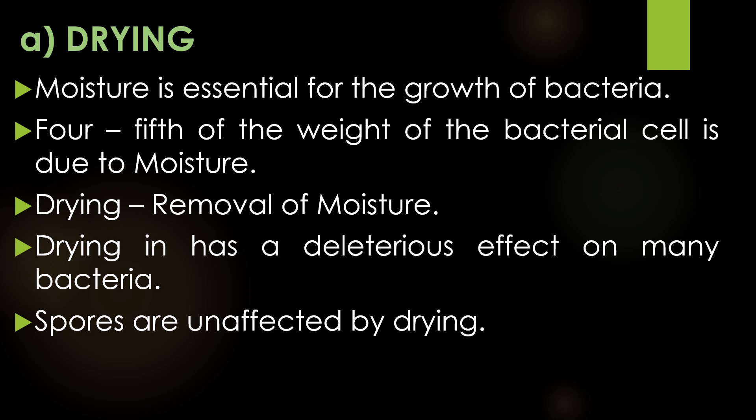The first method of sterilization is drying. Moisture is an essential source for the growth of many bacteria — four-fifths of the weight of a bacterial cell is mainly due to moisture. Drying means the removal of moisture and has a deleterious effect on many bacteria. But unfortunately, spores are unaffected by drying. Because of this, the drying process is not widely considered an effective sterilization process.